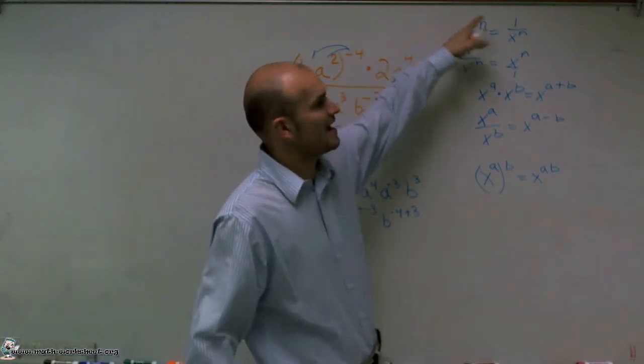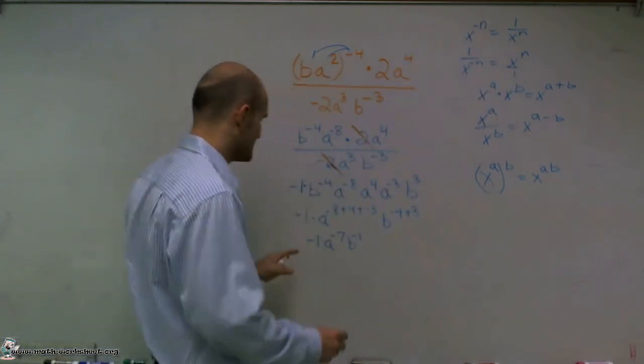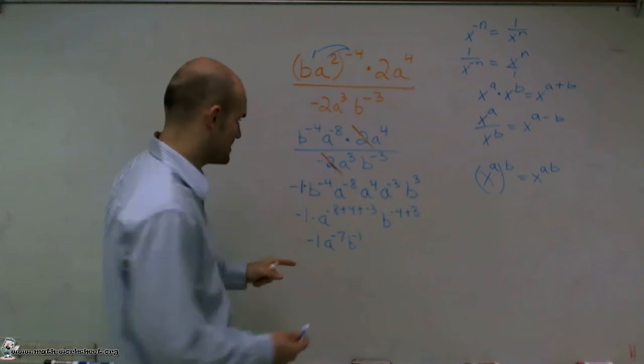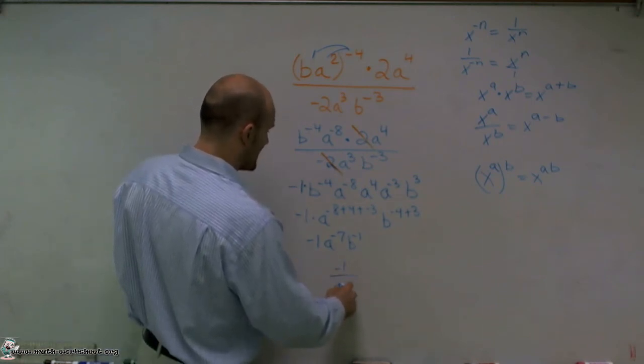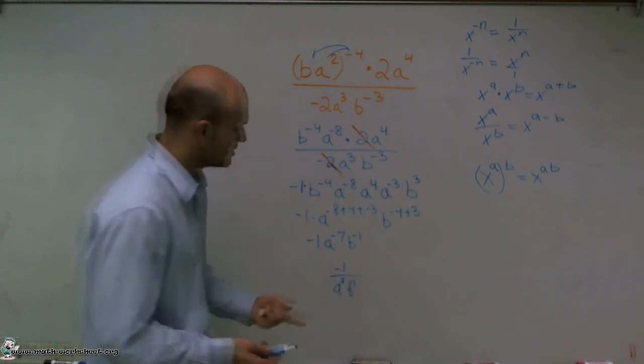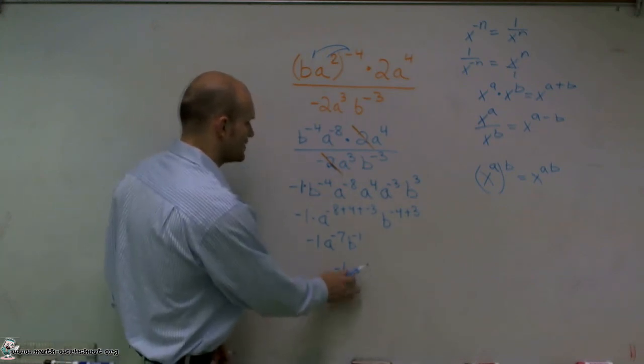Okay? So now, since I know that these two are negative, I have to put them under one to make them positive. My negative one can remain up top. So my final answer is going to be negative one all over A to the positive seventh, B to the positive first, which you don't need to write, which you can leave like that.